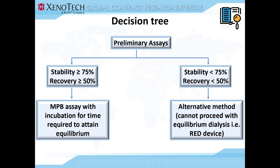Depending on the results of the prelim assay, if we have good stability and good recovery, we would proceed with the microsomal protein binding assay with the time required to attain equilibrium. But if the stability is less than 75% or recovery is less than 50%, we cannot proceed with the RED device, and an alternative method like ultrafiltration or ultracentrifugation would be the choice. This would be decided on a case-by-case basis.